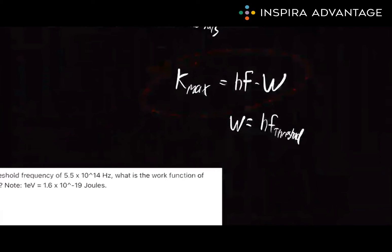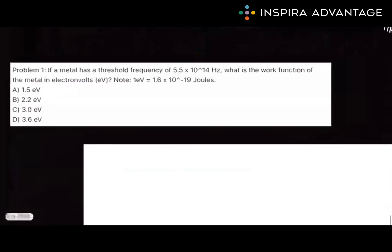To provide a deeper understanding, let's consider a couple practice problems I teased you with at the beginning. So problem one: if a metal has a threshold frequency of 5.5 times 10 to the 14th Hertz, what is the work function in the metal in electron volts? Note, one electron volt is 1.6 times 10 to the negative 19 joules. And the hint here is you will have to convert joules to electron volts. So remember to do that. Give this a chance. Pause the video. Try it on your own.